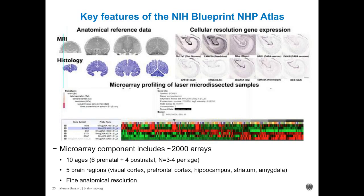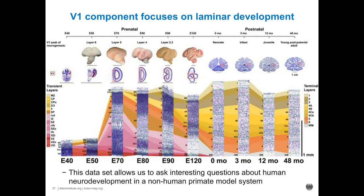You can ask many of the same questions here as with the other atlases. For example, a heat map of a handful of genes across different areas of the brain and across different time points. You can ask where genes are expressed, which genes are highly correlated with a gene of interest, and about differential expression between different layers of the cortex or between cortex and striatum.